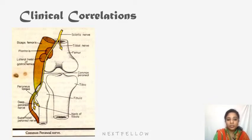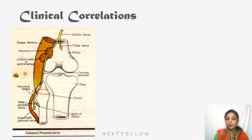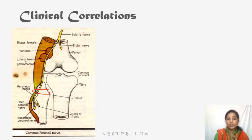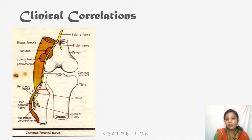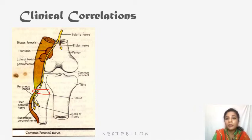Coming to the clinical correlations: the common peroneal nerve is related to the neck of the fibula, so a fracture of the neck of the fibula results in damage to or compression of the common peroneal nerve. The nerve is very vulnerable to injuries where it winds around the posterolateral aspect of the neck of the fibula. At this site it may be injured by direct trauma or by a tight plaster cast. It may also get entrapped between the fascial bands beneath the fibularis longus (peroneus longus) muscle — this is called the fibular tunnel or peroneal tunnel.